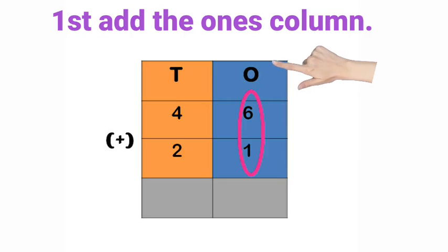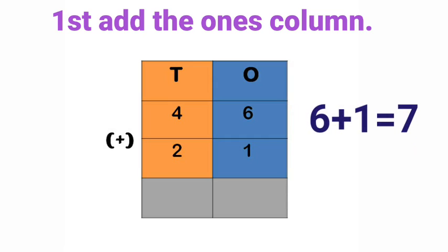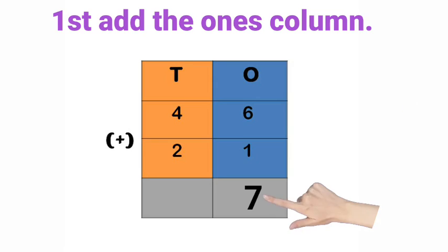First add the ones column. Six plus one is equal to seven. The answer is seven. Seven is a one-digit number.